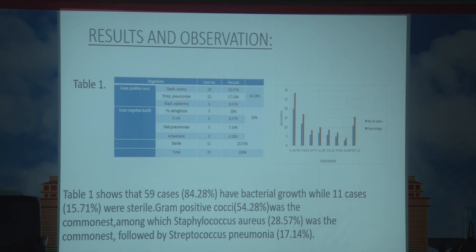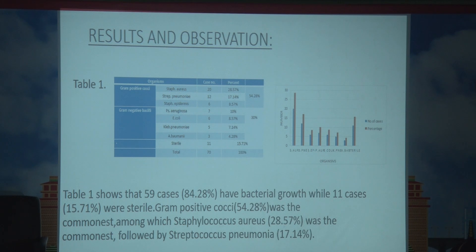From our study, as observed in Table 1, out of 70 cases, 59 cases — that is 84.28% — showed bacterial growth, while 11 cases showed no growth. Out of these, gram-positive cocci were the predominant finding at 54.28%, followed by gram-negative organisms at 30%. This is the bar chart showing the findings.